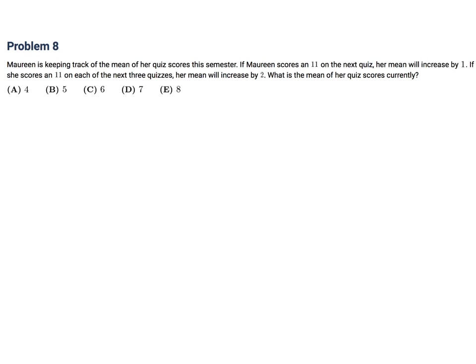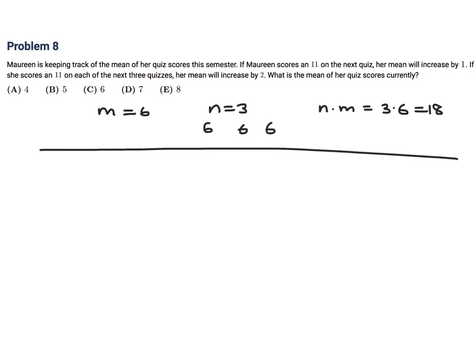Maureen is keeping track of the mean of her quiz scores this semester. If Maureen scores an 11 on the next quiz, her mean will increase by 1. If she scores an 11 on the next 3 quizzes, her mean will increase by 2. What is the mean of her quiz scores currently? Let N be the total number of tests and M be the current mean. The total score plus 11 divided by N plus 1 equals M plus 1. That's the algebra for the first part.